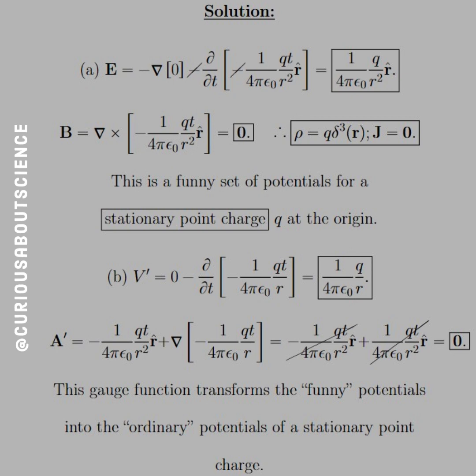And what we see is that this funny set of potentials for a stationary point charge Q at the origin. Okay? We kind of saw that with E right off the bat. So that's kind of cool that we get the fields we expect for point charge at the origin without using the scalar potential that we were expecting and a vector potential of zero.